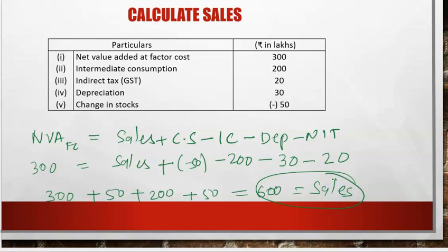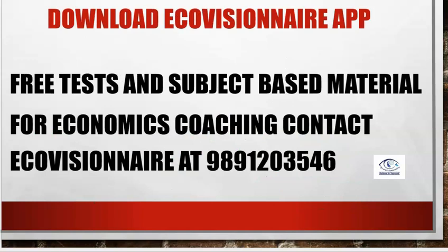You can practice these Output Method questions. The three steps are: Step 1 — GVOMP; Step 2 — GVAMP; Step 3 — NVAFC. You can also do it directly if you know the formula. Download the Ecovisionary app to get study material from our batches. For Economics coaching, contact us at 98912-03546. I will be back with the next and last class on National Income covering GNP, welfare, real income, and nominal income. Thank you.